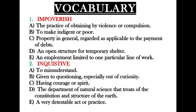Now moving to the vocabulary section. The first word is 'impoverished.' It is a verb. The correct meaning is 'to make indigent or poor.' The other options — the practice of obtaining by violence, property in general, an open structure, and an employment — are all nouns, so they cannot be correct for a verb form.